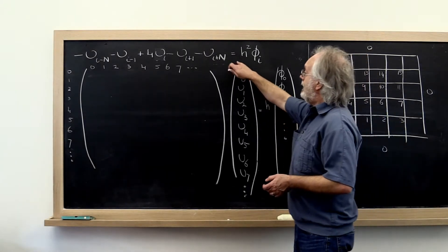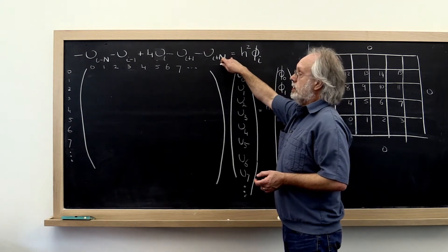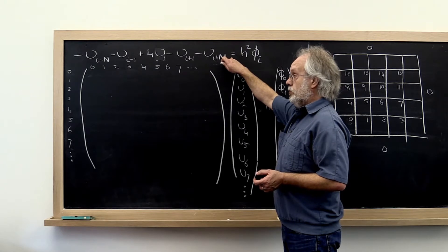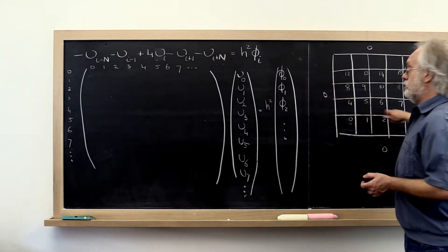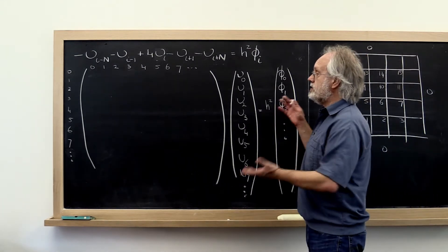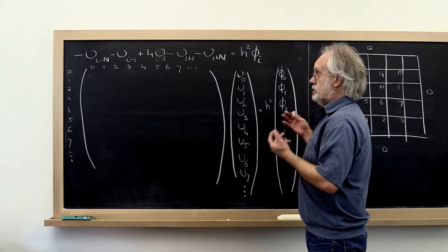What we have now are n-squared equations that look like this in n-squared unknowns, one for each mesh point. And what we would like to do now is translate this into matrices and vectors.